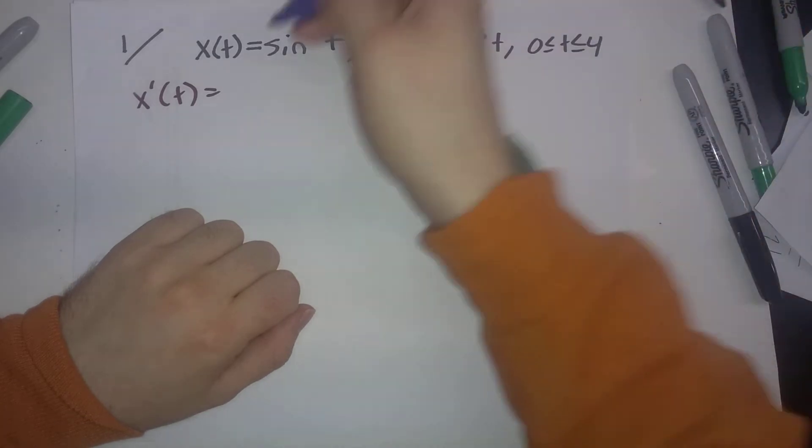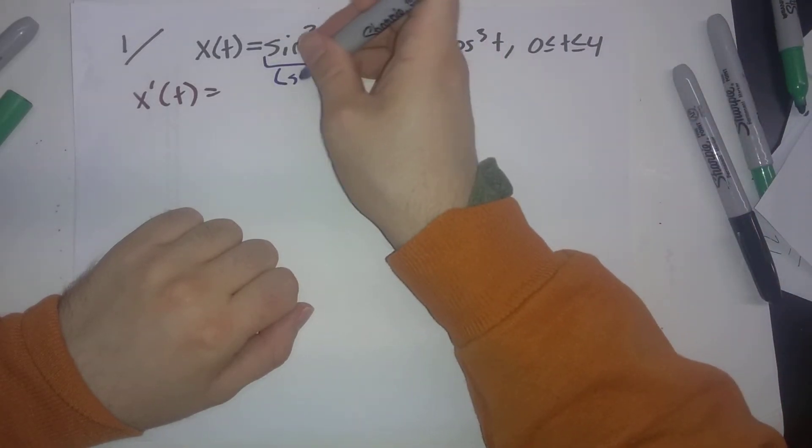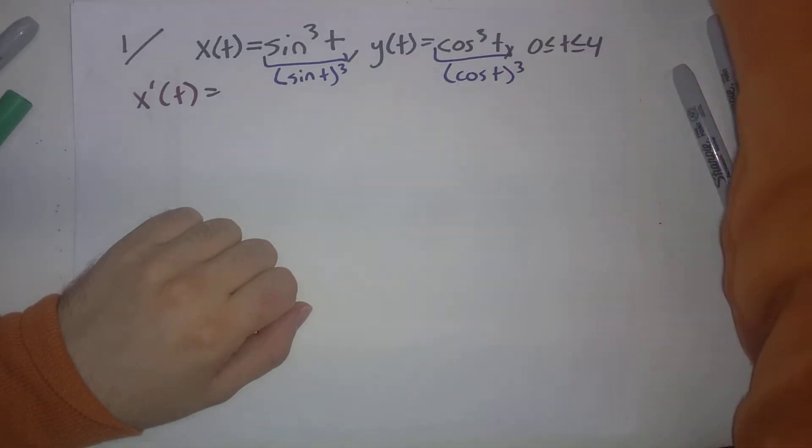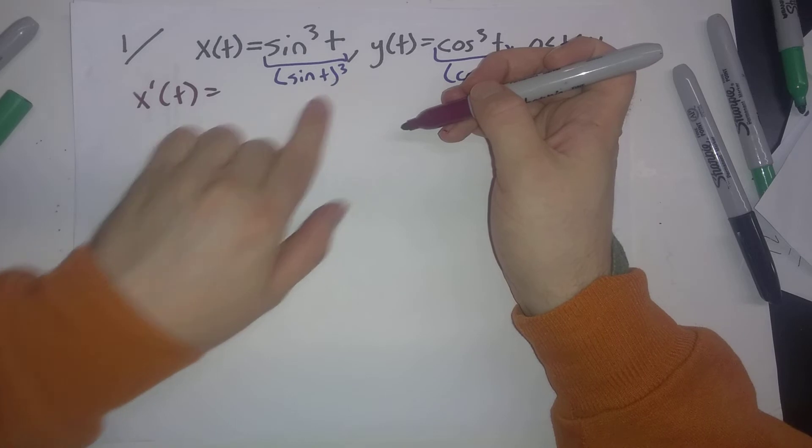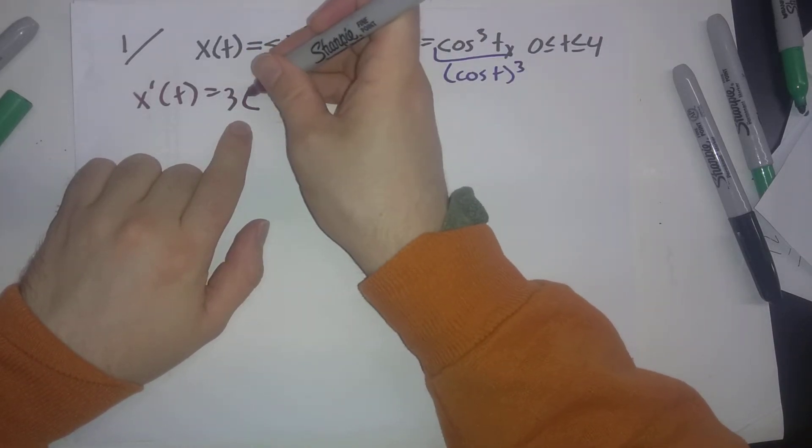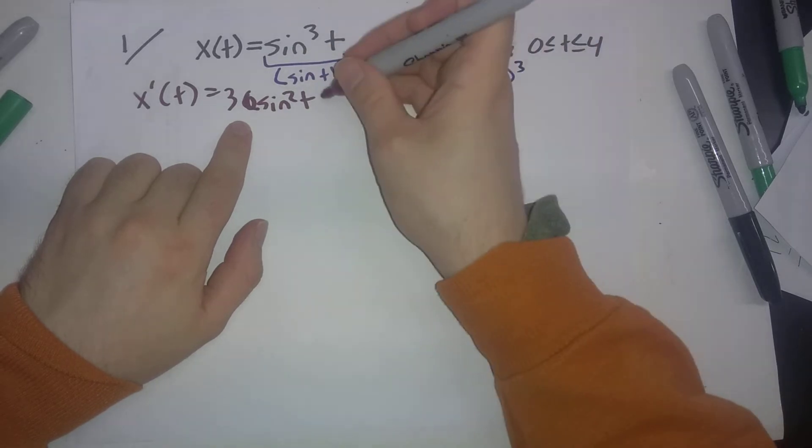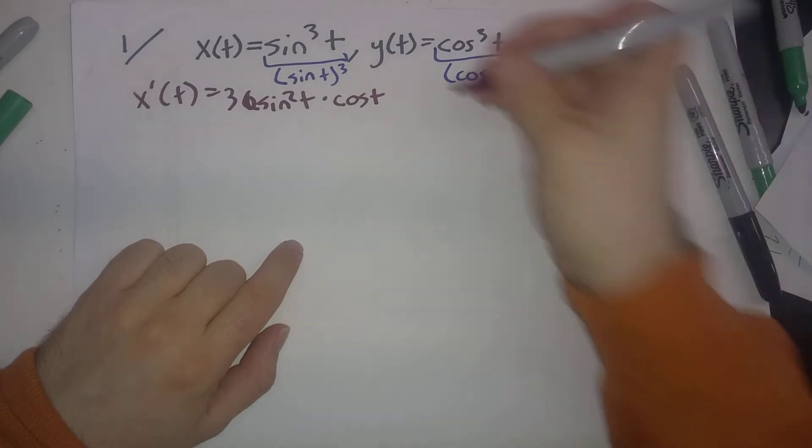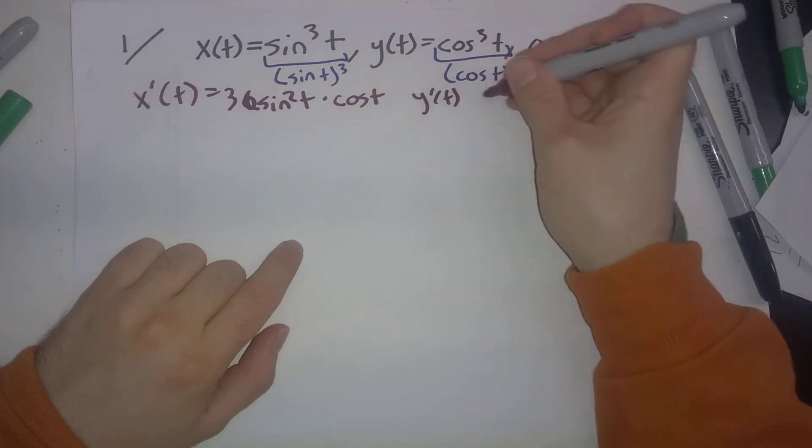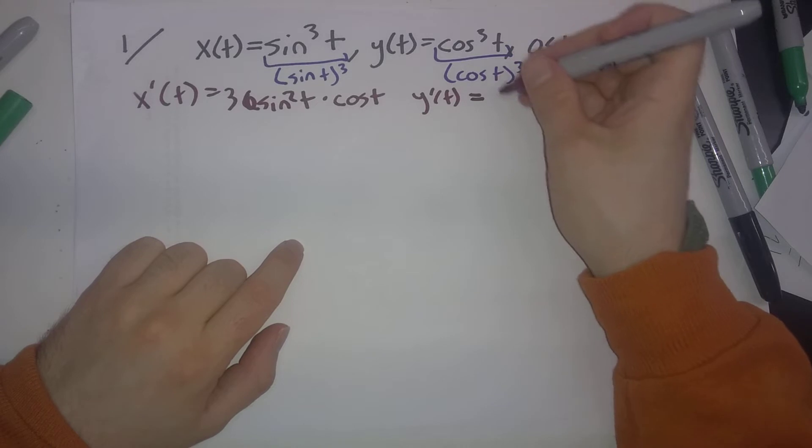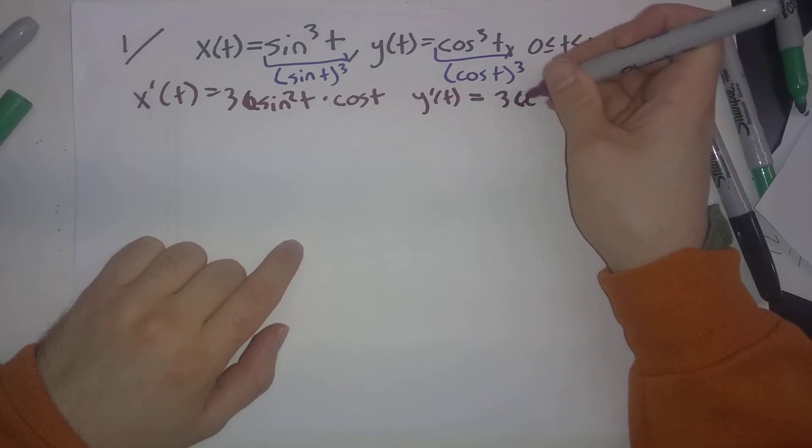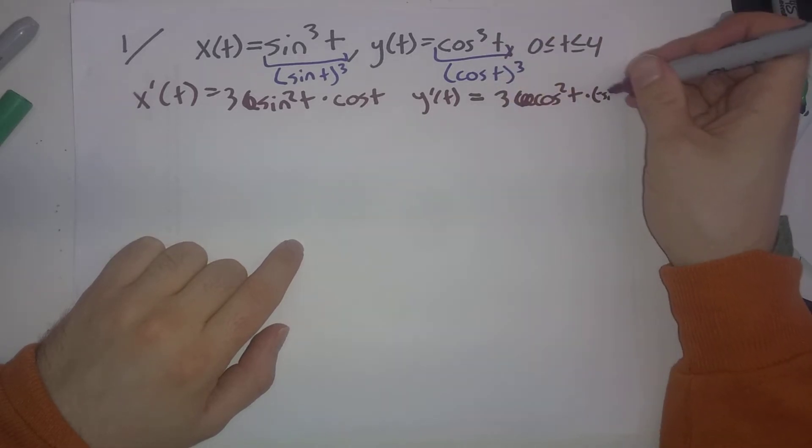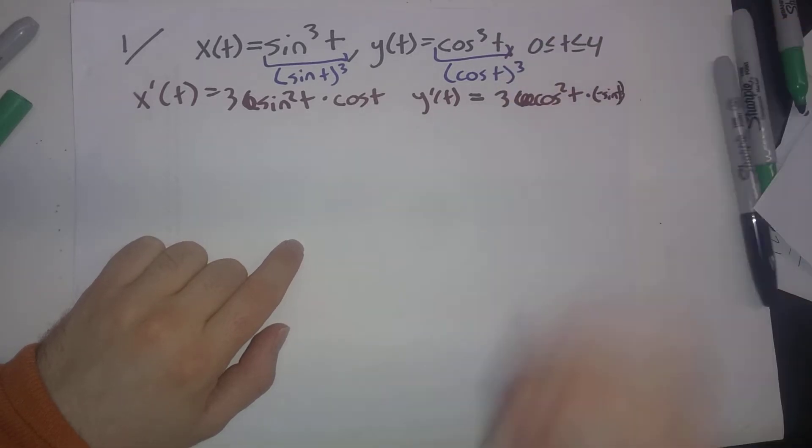x'(t): Let's point out this is really (sin t)³ and this is really (cos t)³. By the chain rule, we end up with 3sin²t times, chain rule says, a factor of cos t pops out. y'(t), by the chain rule, 3 comes down, times cos²t times, chain rule says, minus sin t pops out.